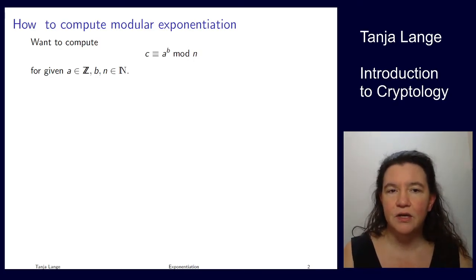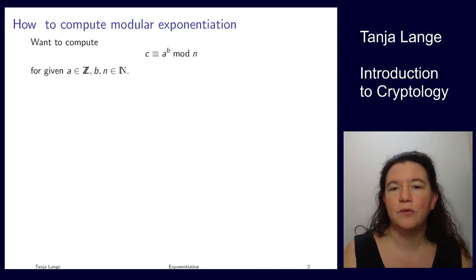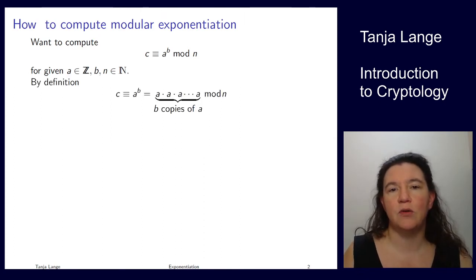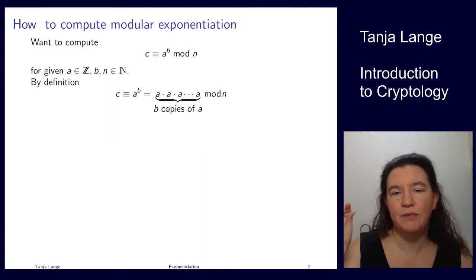One situation we see a lot in public key cryptography is that we are computing an exponentiation modulo some other number. So here we have some integer a and we compute a to the b modulo n. Now by definition, that means that we're computing the product of b copies of a and then we're reducing it modulo n.